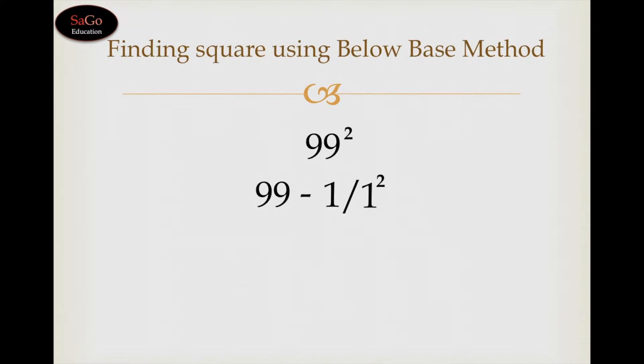99 minus 1 is 98. Write down 98, make a slash. 1 squared is 01 because in the base 100 there are two zeros, and the square of 1 has come 1 only, which is a single digit.